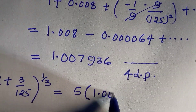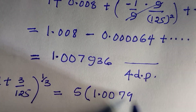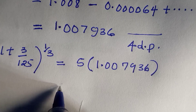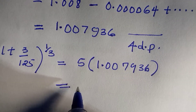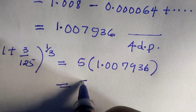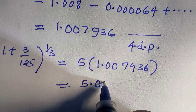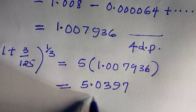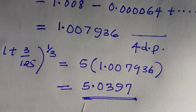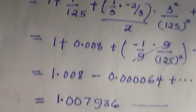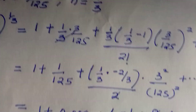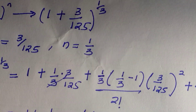Recalling from above that we had 5 times (1 + 3/125)^(1/3), the final result is 5 multiplied by 1.0079936, giving approximately 5.0399. This is the cube root of 128 by binomial expansion. I hope you liked this video — thanks for watching, subscribe, and never stop learning.